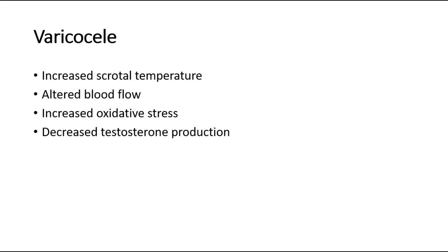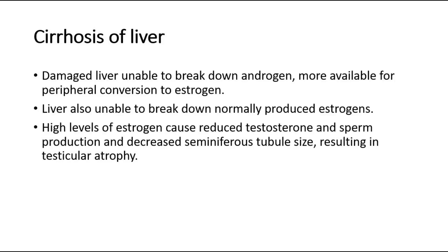In varicocele cases, the mechanisms are due to increased scrotal temperature, altered blood flow, increased oxidative stress, and decreased testosterone production. Liver cirrhosis can also cause testicular atrophy. A damaged liver will be unable to break down androgen, hence more available androgens for peripheral conversion to estrogen. The liver is also unable to break down normally produced estrogens. So high levels of estrogen cause reduced testosterone and sperm production and decreased seminiferous tubule size, resulting in testicular atrophy.